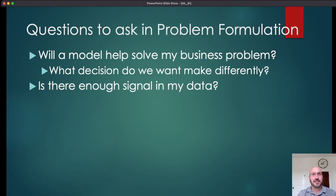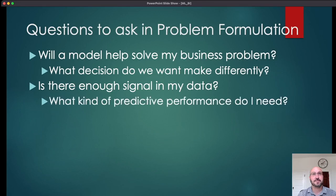A second question is: is there enough signal in my data? It may be the case that you just can't predict the thing you're trying to predict as well as you would like, and that no modeling will help because there's just not enough signal in the data — not enough variation in the different cases to say meaningfully different things about them. Related to that is: what kind of predictive performance do I need? How well would this model have to stratify your population to give you something meaningful in a business sense?